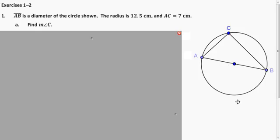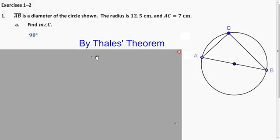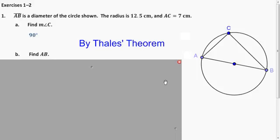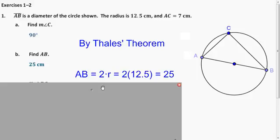So let's go and apply what we've learned in this lesson. So first, we want to find the measure of angle C. Well, they tell us that AB is a diameter, and we just learned that it must be 90 degrees by Thales' theorem. So now can we find out what AB is? Well, AB is a diameter, and they give us the radius is 12.5, so the diameter is just going to be twice the radius.